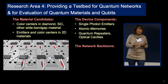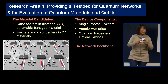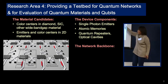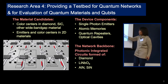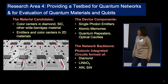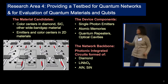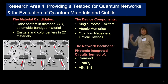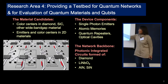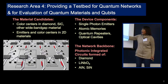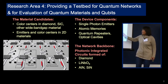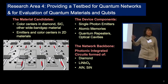As we began to explore the materials, we also began to explore the framework that protected those materials and allowed them to behave as devices within the network. And then finally, there's the network backbone itself — photonic integrated circuits formed of diamond, which is a natural platform given the extensive work done on NV centers in diamond.